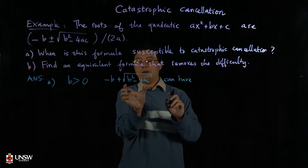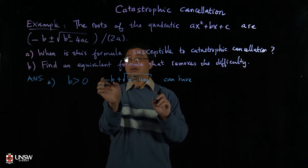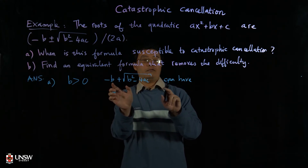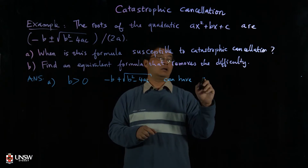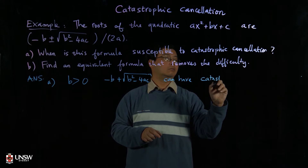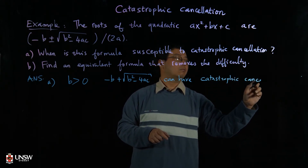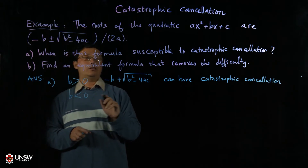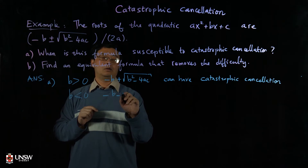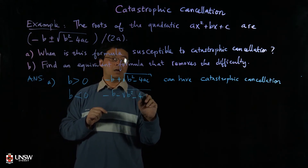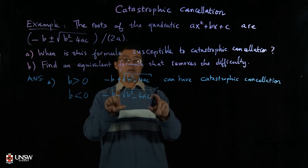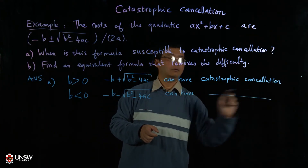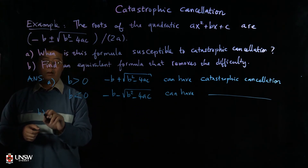This is because √(b² − 4ac) is a floating-point number and −b is another floating-point number. If those two numbers are very close to each other, taking the difference could produce catastrophic cancellation. Similarly, when b is negative, −b is positive and that term can also have catastrophic cancellation.